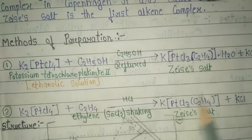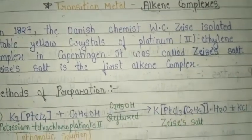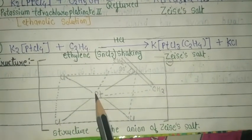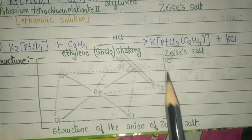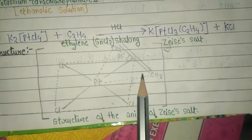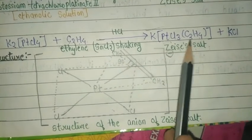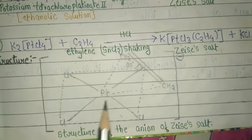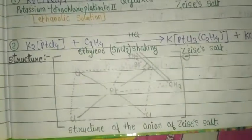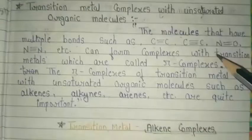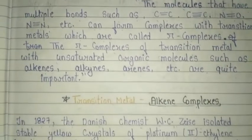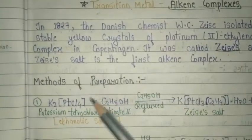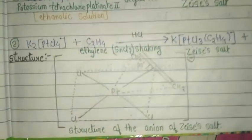Zeise's salt — the first alkene complex — also has an easy structure. The structure shows PtCl₃ with three chlorines, and then C₂H₄ (ethylene) coordinated at 90°. This is the structure of the anion of this salt. So this was the definition of transition metal complexes, the most important alkene complex, two methods of preparation, and the structure.